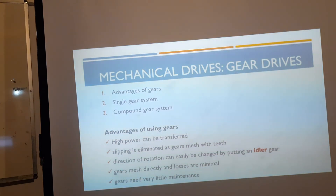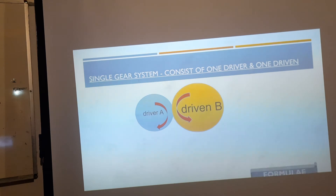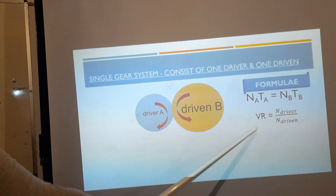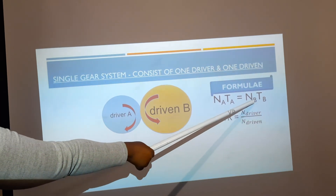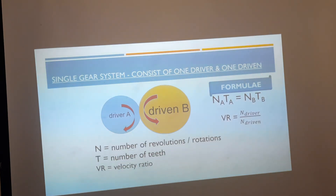So the advantages of gears are: high power can be transferred, slipping is eliminated as gears mesh with teeth, direction of rotation can easily be changed by putting an idler gear, gears mesh directly so losses are minimal, and gears need very little maintenance. Now, the single gear system consists of one driver and one driven gear — two gears total. The equation used is: NaTa = NbTb, where N is the number of revolutions and T is the number of teeth for each gear. The velocity ratio VR equals the number of revolutions of the driver divided by the number of revolutions of the driven.